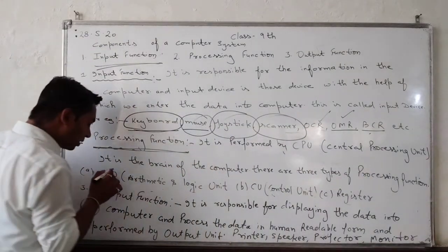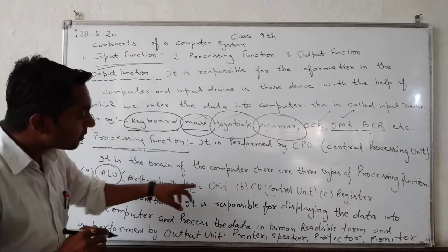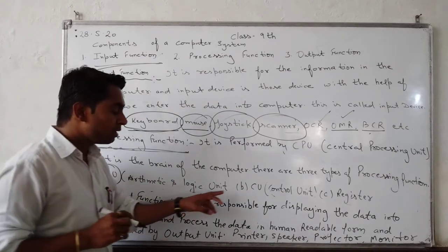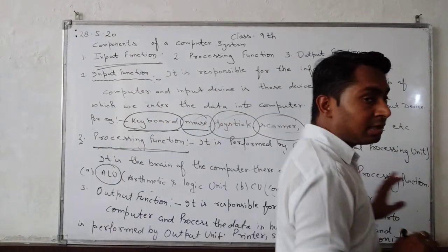First, ALU. ALU is the full form of arithmetic and logic unit. CU is the full form of control unit. And C register.